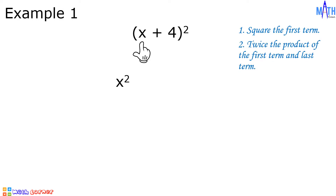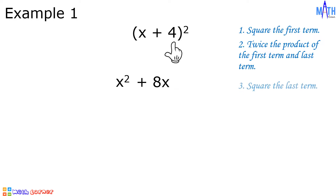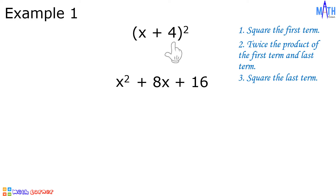Step number two: twice the product of the first term and the last term. x times 4 is 4x. 4x times 2 is equal to 8x. Last step: square the last term. The last term is 4. 4 times 4 is equal to 16. And the square of x plus 4 is equal to x squared plus 8x plus 16.